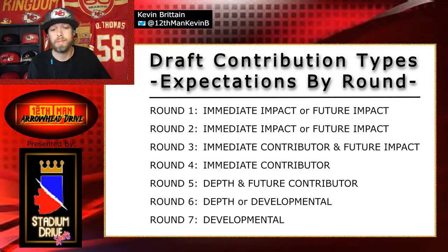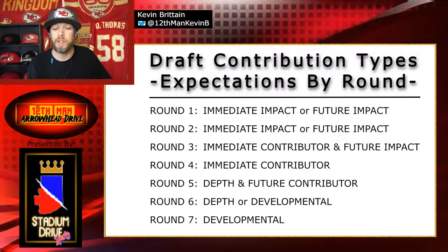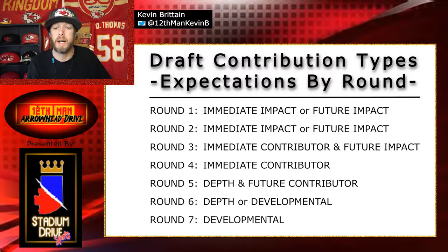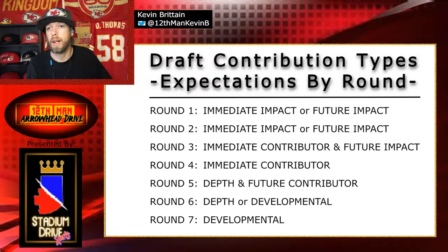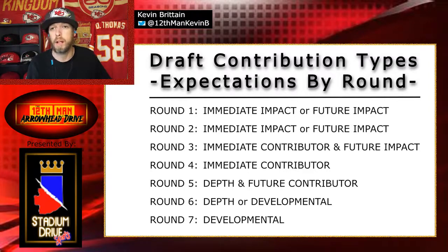Seventh round: give me a developmental guy, somebody that I like what he has to offer, our coaching staff can work with him and build him up, and maybe he could be something in the future. Worst case scenario, when you're looking at rounds five, six, and seven, you're hoping at the very least you're getting somebody that can help out on special teams. That's why, especially around six and seven, I'm typically looking at linebackers with some athleticism, cornerbacks, safeties, and receivers — guys that can contribute on the special teams side. It's usually those positions that are best at it, or even an athletic running back that can help get that job done as well.